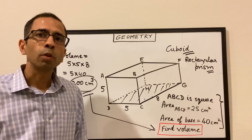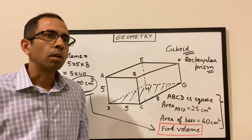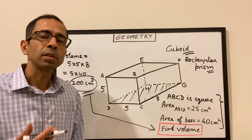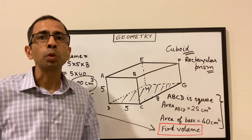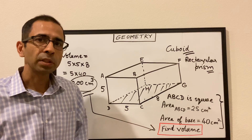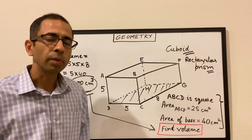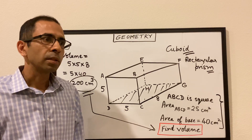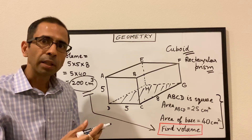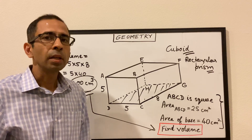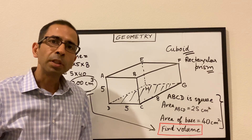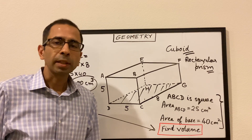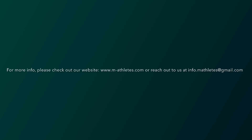Hopefully you liked the video and it gave you a good perspective on what 3D figures are, what the third dimension is, what surface area is, the two different types — lateral and total surface area — and what volume is. Volume is the capacity contained within the three-dimensional figure, calculated by the area of the base times the height. If you like the video, please like and subscribe. See you in the next session.